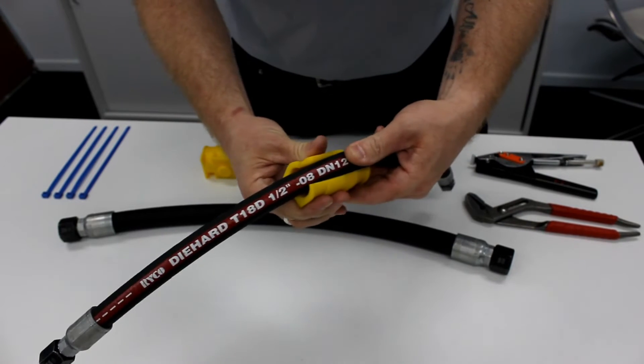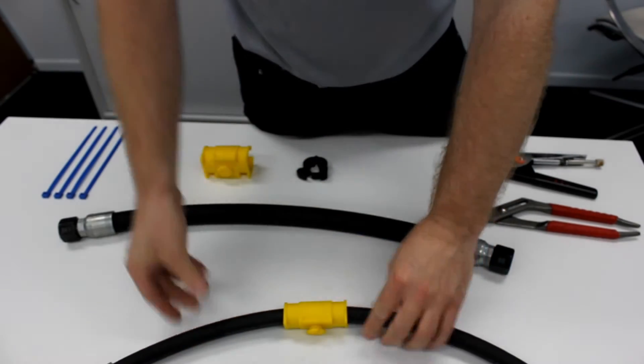It is now time to fit the HoseMate clamps onto the hoses by clipping the hoses onto the clamps.